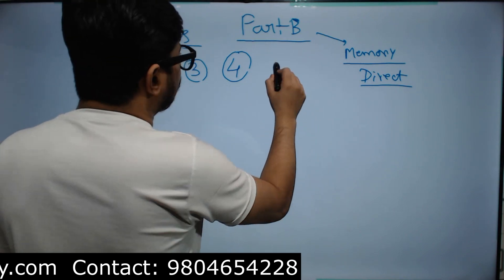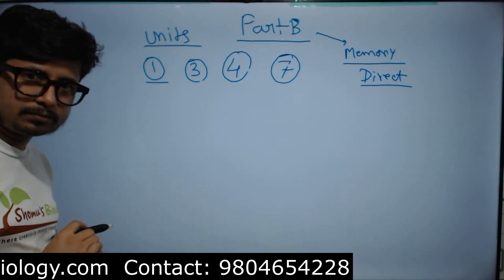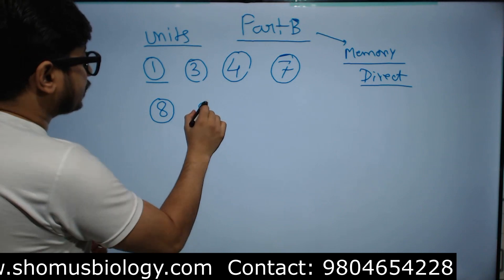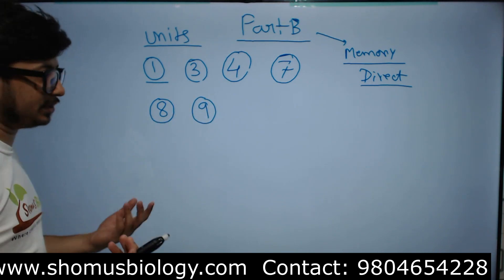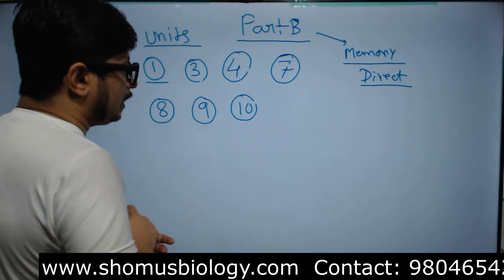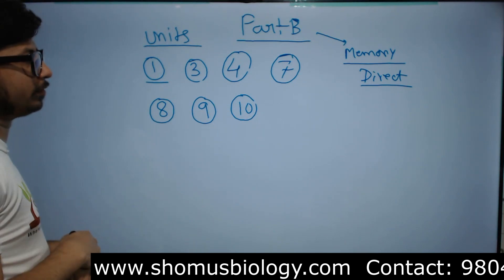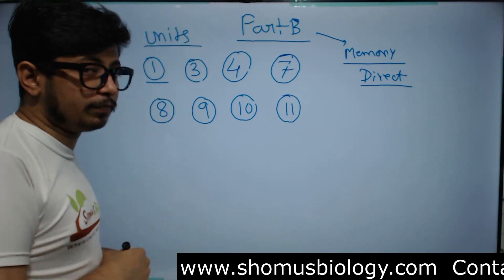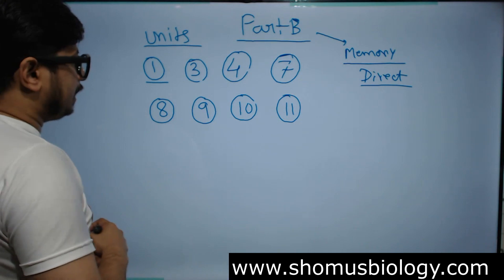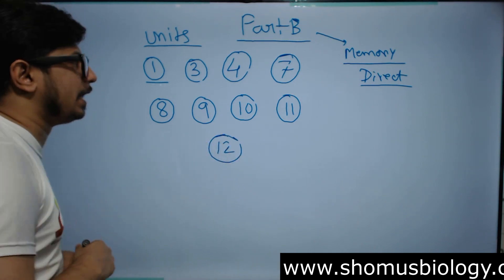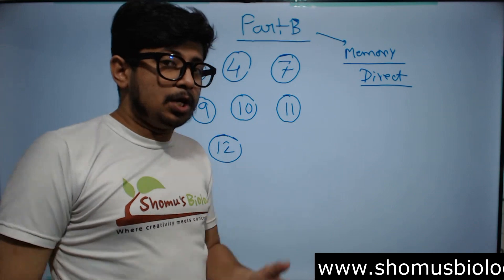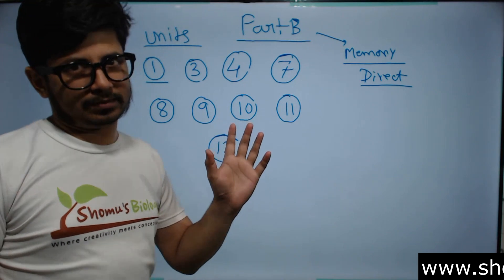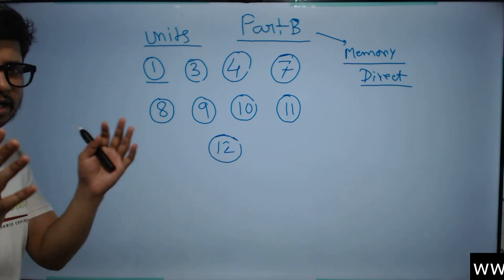Human physiology is very important for Part B, followed by genetics, which is Unit 8. Unit 9 is classification biology, also important for Part B. Unit 10 is environmental biology and ecology, very important. Unit 11 is evolutionary biology, also important for Part B. Finally, Unit 12 is applied biology, which is also important for Part B. So these are the important units — 9 out of 13 — for the upcoming CSI NET examination.